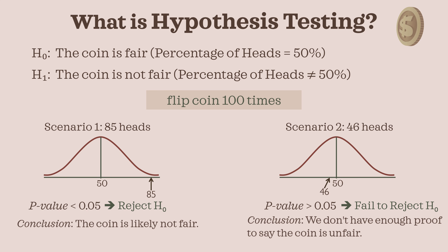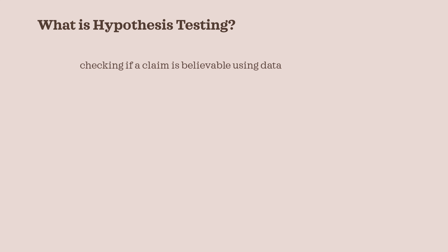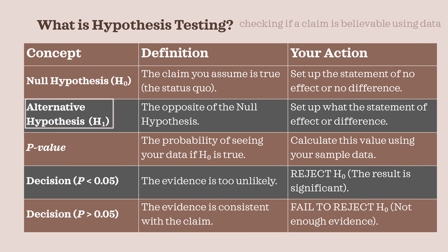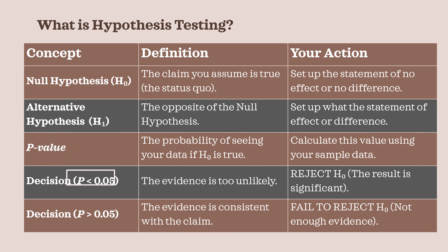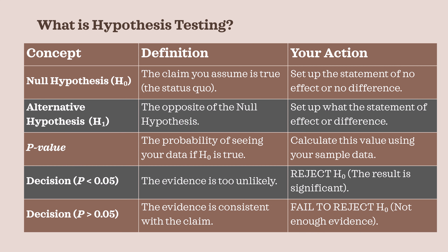In summary, hypothesis testing is checking if a claim is believable using data. The claim you test is the null hypothesis. The opposite idea is the alternative hypothesis. You collect a sample to see whether the data fits the claim. You compute a p-value. A low p-value means the data does not fit the claim — you reject the null hypothesis and say the result is significant. A high p-value means the data fits the claim — you fail to reject the null hypothesis and the result is not significant. And that's it. Thanks for watching.